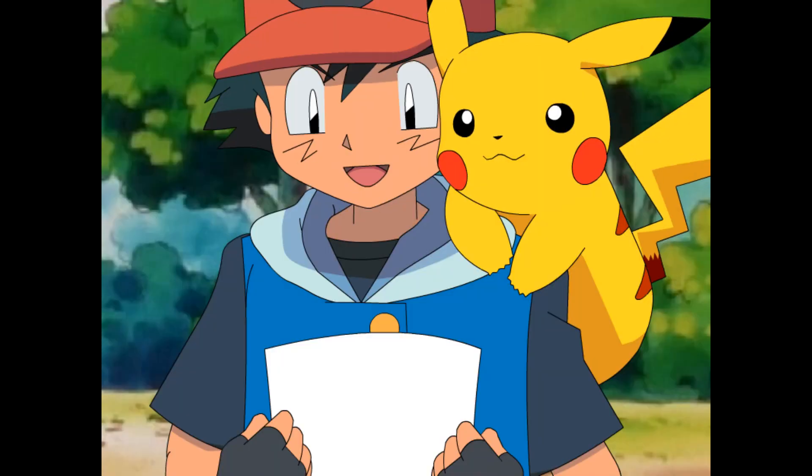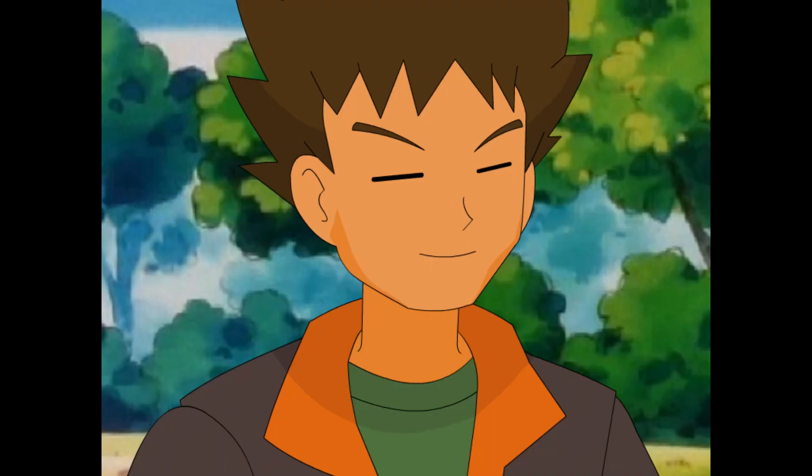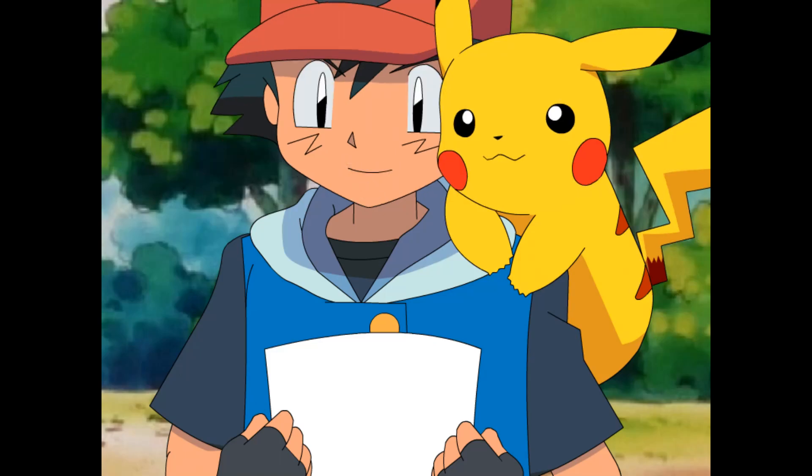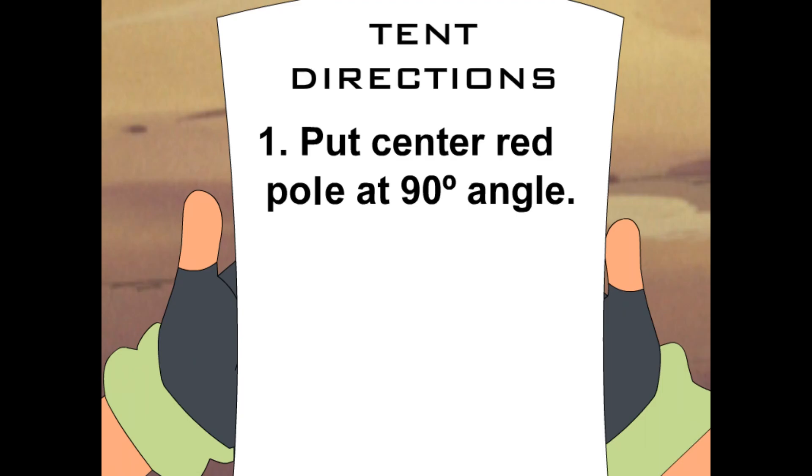Okay, so the first step says put the center red pole at a 90 angle. Um, 90 angle? Are you sure that's what it says? It sounds kind of weird. At a 90 angle? Wait, maybe it says 900. But that other O is smaller. Maybe it's just an inkblot?